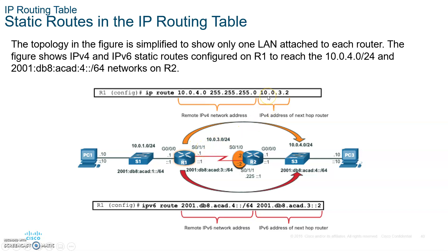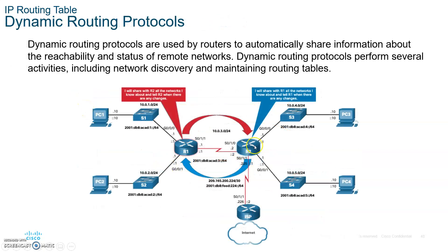With static routing, you manually create entries in the routing table and you'll see the letter S when those entries are added. With dynamic routing, routers pass updates to each other and an algorithm calculates the best routes to populate the routing table automatically. Routing protocols used for this include OSPF, EIGRP, and RIP.